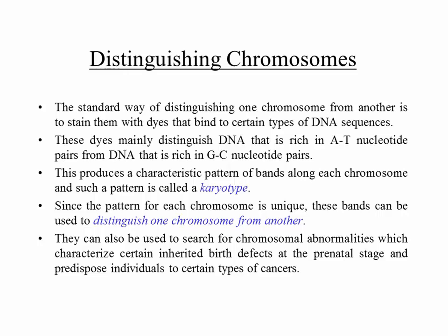If you see a problem in the pattern, there is a problem with the chromosome. For example, if chromosome 10 shows a difference in karyotyping, something is messed up, making that unborn child susceptible to some disease. This karyotyping can be used to search for chromosomal abnormalities that characterize certain inherited birth defects at the prenatal stage, and it can predispose the individual to certain types of cancers.